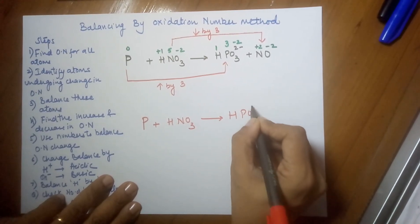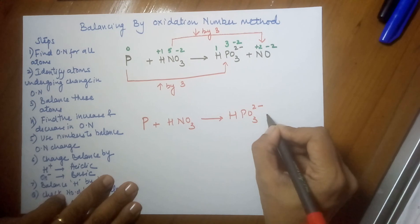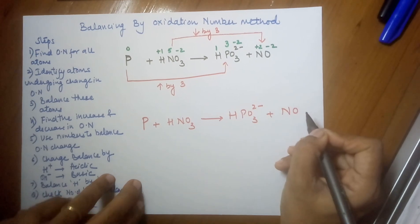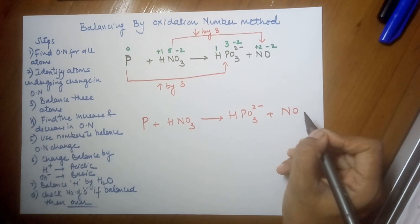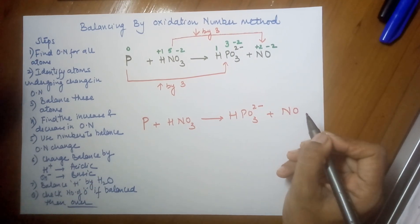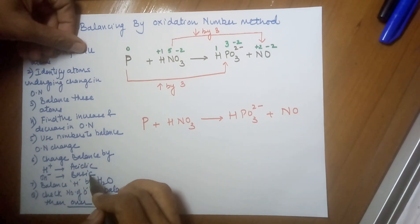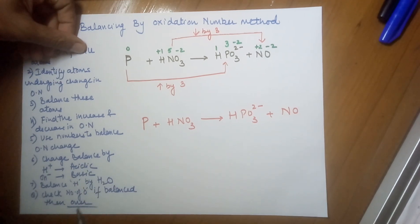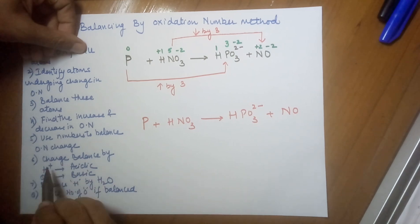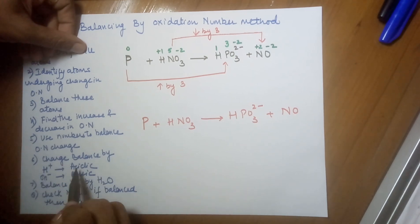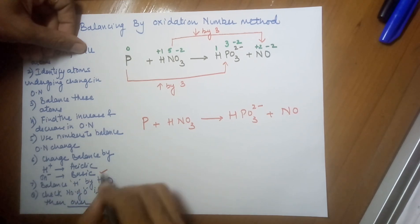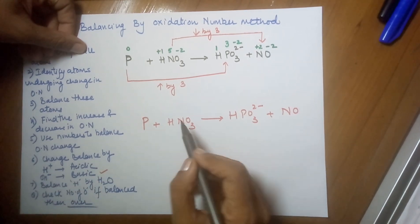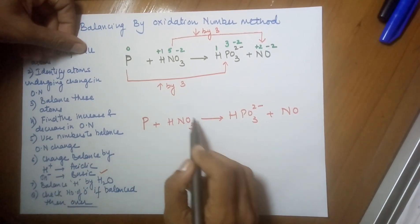After this point, rewrite the equation: phosphorus plus nitric acid gives HPO3(2-) plus NO. This time I will be doing it in basic medium for your convenience, so that you know how to balance in basic medium, as I had already done in acidic medium in my previous video.